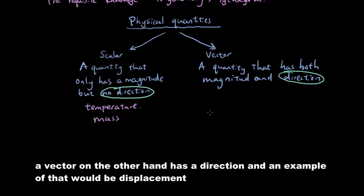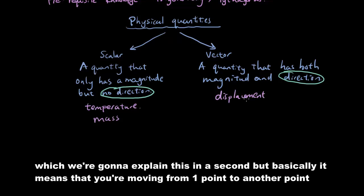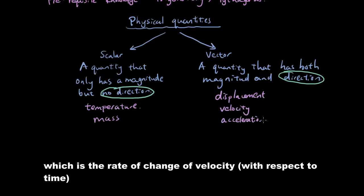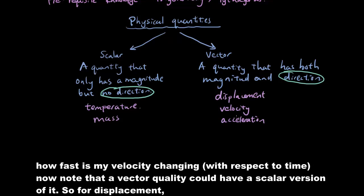A vector on the other hand has a direction, and an example of that would be displacement, which we're going to explain in a second. But basically, it means that you're moving from one point to another point, and you can record what direction you moved in. Velocity. I'm traveling in the direction of north 30 degrees east at a velocity of 50 kilometers per hour. And then acceleration, which is the rate of change of velocity. How fast is my velocity changing?